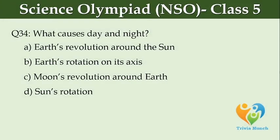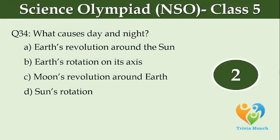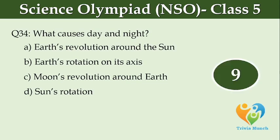What causes day and night? Option A: Earth's revolution around the sun, Option B: Earth's rotation on its axis, Option C: Moon's revolution around Earth, Option D: Sun's rotation.